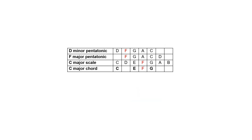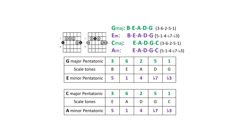We can eliminate superimposing the D minor and F major pentatonic scales over a C major 7 chord because they contain the note F, which clashes with the chord's third. That leaves us with the pentatonic scales of E minor and G major, A minor, and C major.